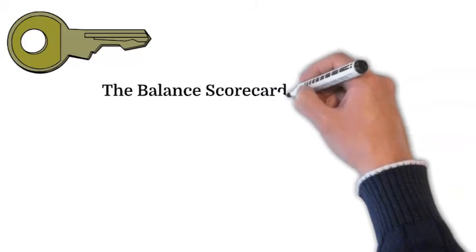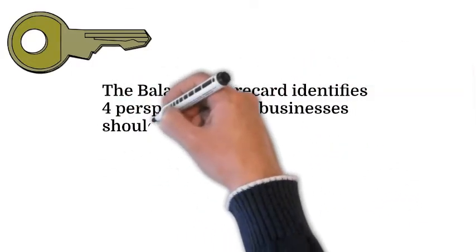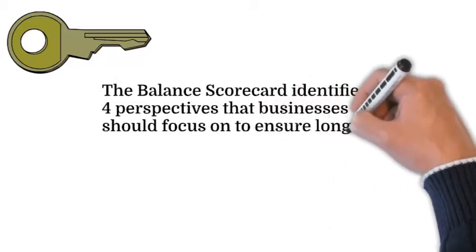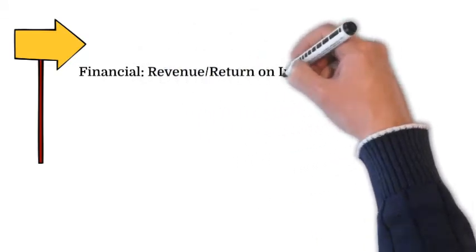Basically, the Balanced Scorecard identifies four perspectives that businesses should focus on to ensure long-term survival. What are these four perspectives? Number one, financial.